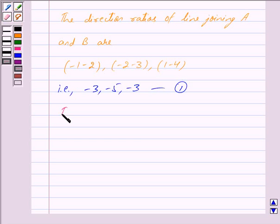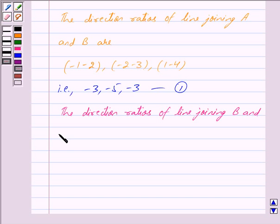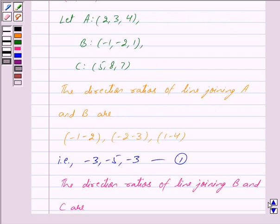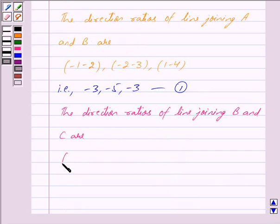Now the direction ratios of line joining B and C are (5 + 1, 8 + 2, 7 - 1). That is we have (6, 10, 6).